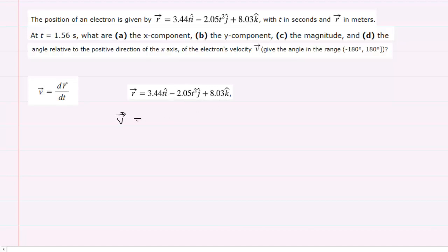So for example, computing the derivative in the x direction, we would have the derivative of 3.44t, and the derivative of that with respect to time, of course, is just 3.44, and that will be in the i hat direction.